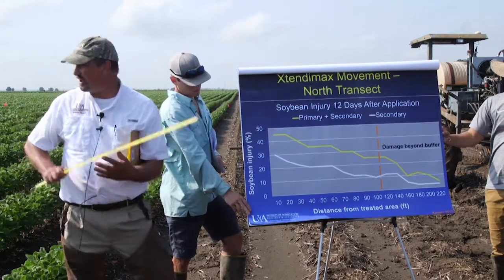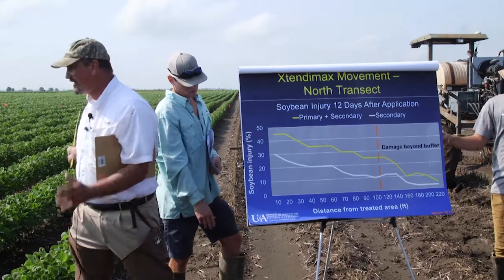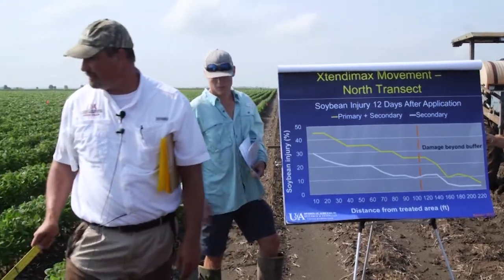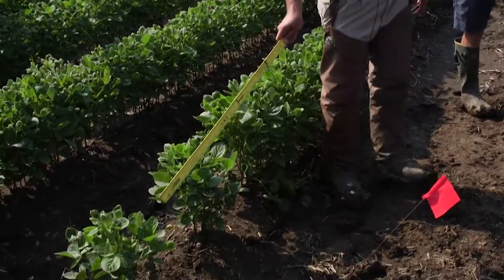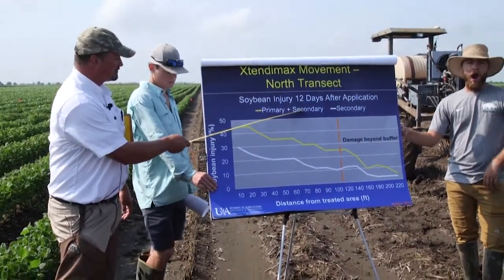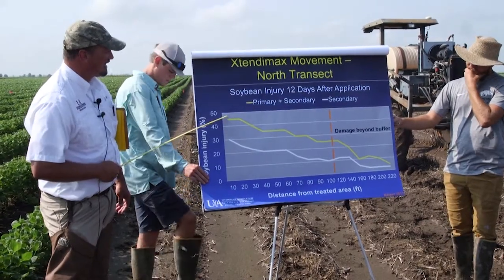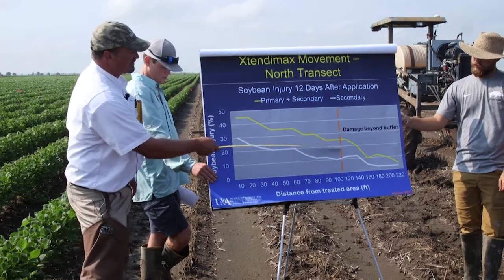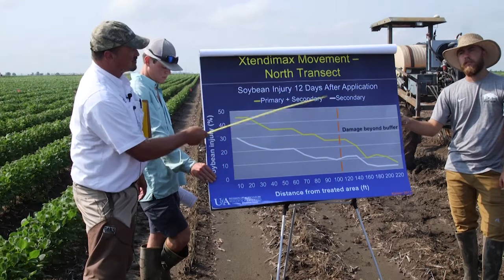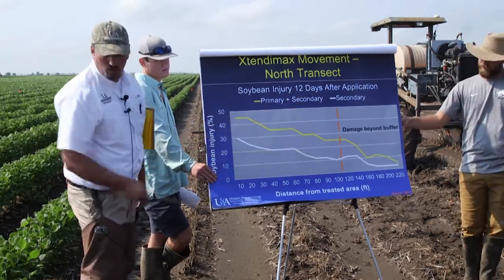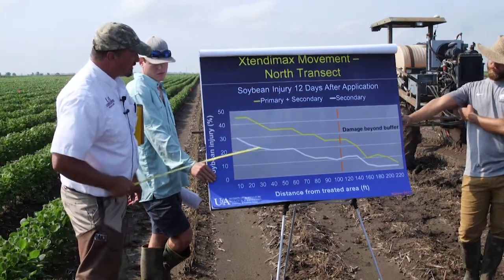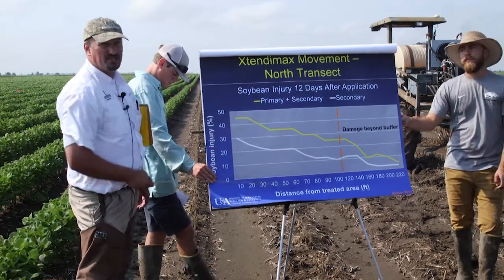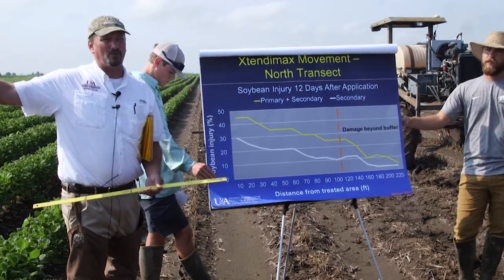Looking at the north transect: what was not under the bucket represents a combination of primary and secondary movement — physical drift, volatility, and other factors. The yellow line for Extendamax started at 45% damage about 10 feet in, and at the 110-foot buffer we're at about 25% damage at 12 days. For the secondary movement only — what was under the bucket — we started at 30% damage, dropping to about 10% at 110 feet. This is in a 2.9 mile per hour average wind during application.